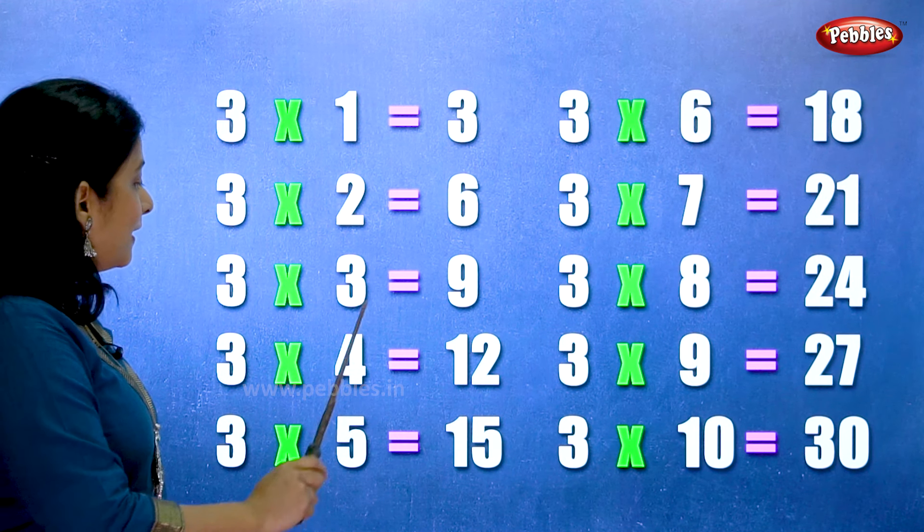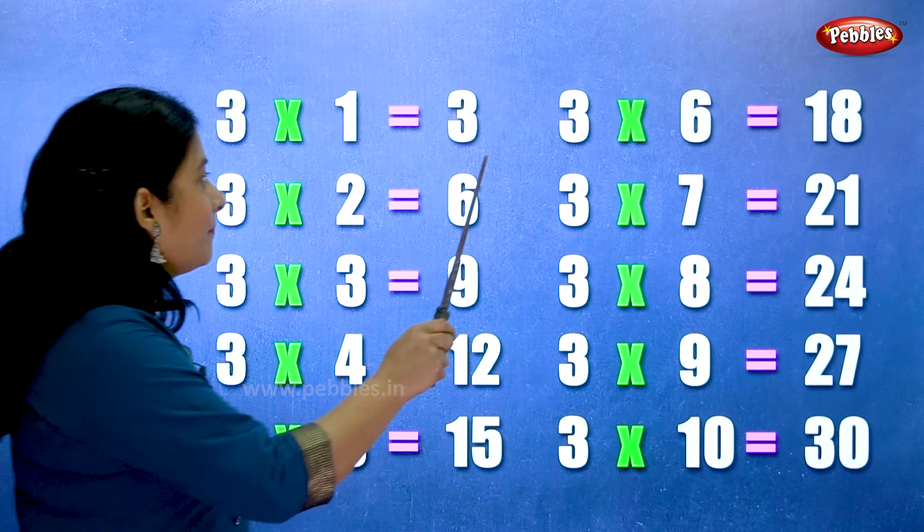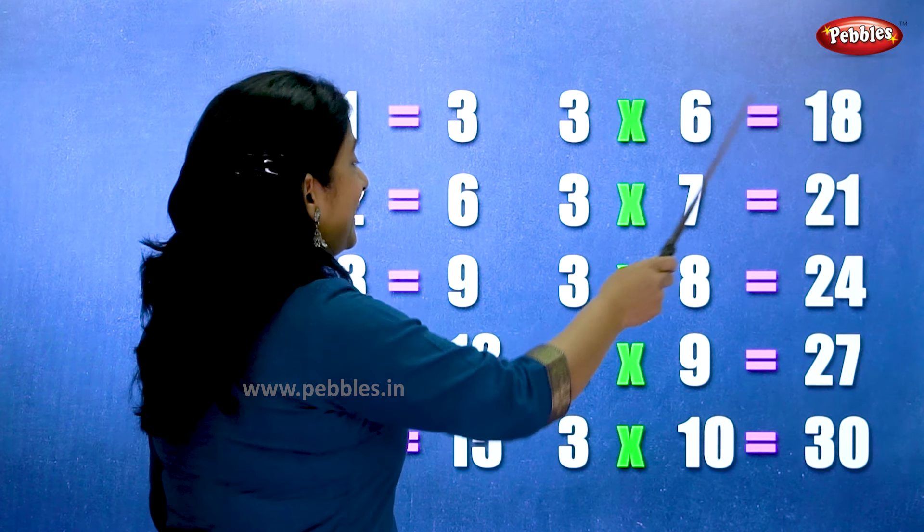Three fives are fifteen. Three sixes are eighteen.